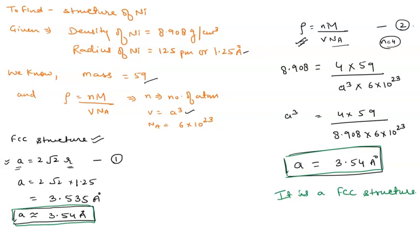Or we can find out the value by solving this, like using this formula density. Here we can use this formula A cube. From this equation, we can find out the value of A and by putting the value of 3.54 in this case, we can find out the value of N.